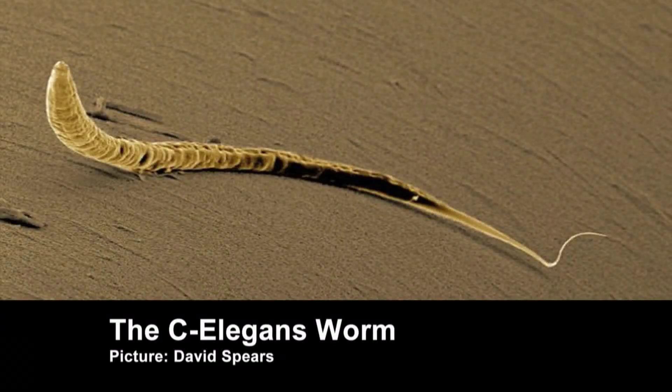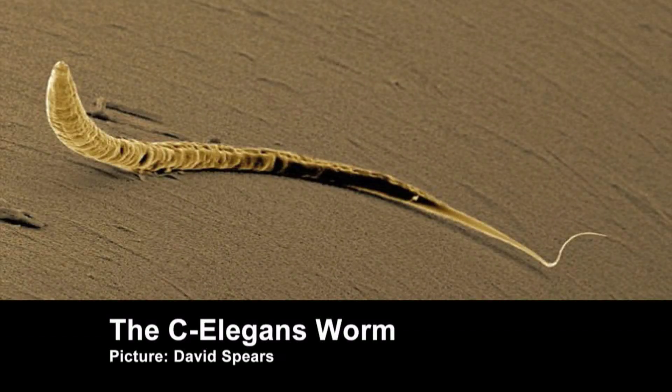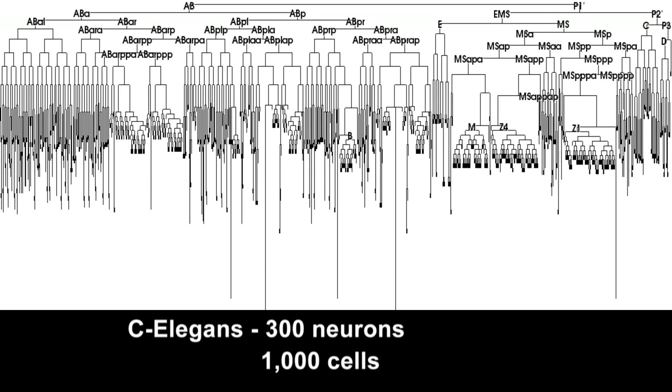So these scientists have started with something smaller, the C. elegans worm, which has just 300 neurons and 1,000 cells. It's a simple creature, but still shares 80% of the genes of a human body. It has a brain,